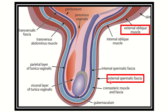Immediately underlying the skin, this is the external oblique muscle part, and this is the external spermatic fascia. So this external spermatic fascia is the first structure and it arises from the external oblique muscle.